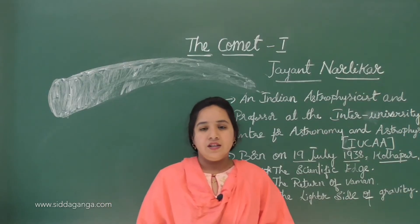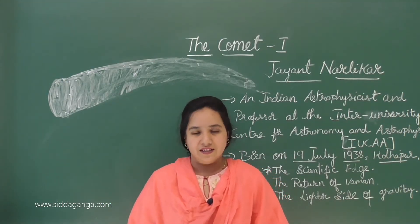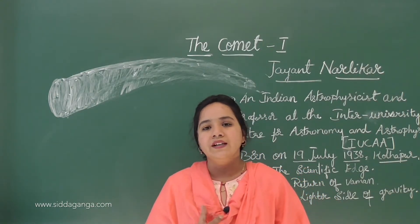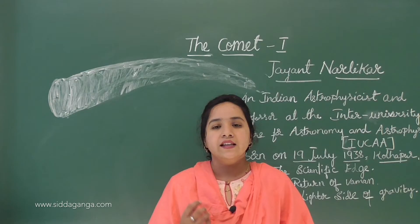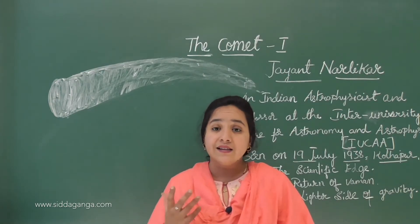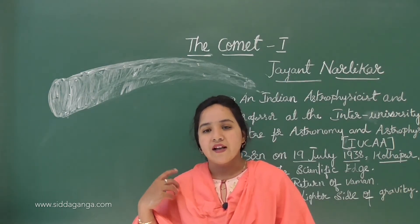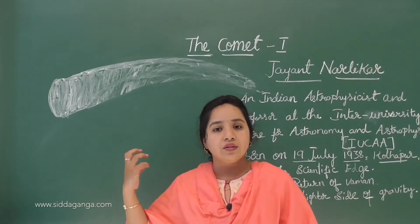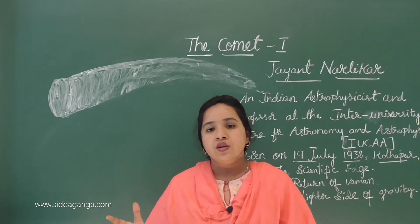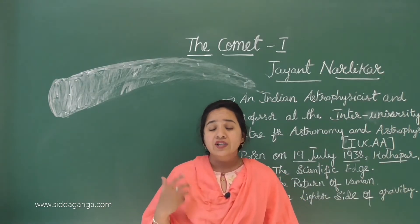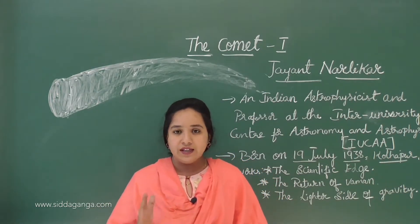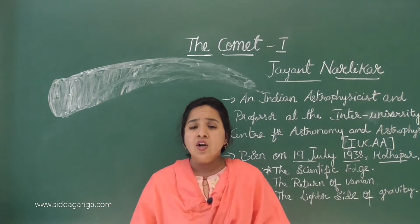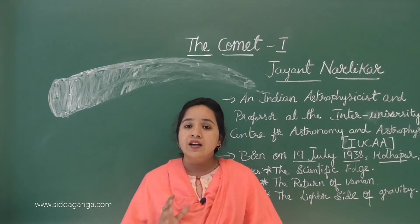Let us see about the comet. You all love to see comets, is it? A comet contains ice particles, gases, and dust. When it passes close to the sun and light reflects on it, it becomes very shiny. A comet is an icy body of the solar system.